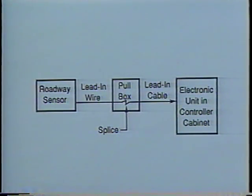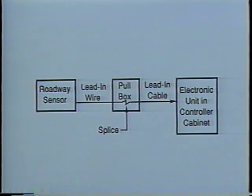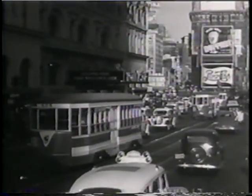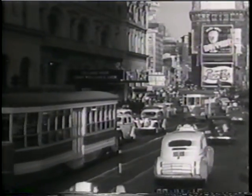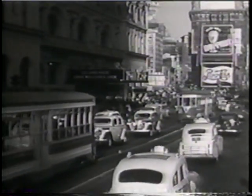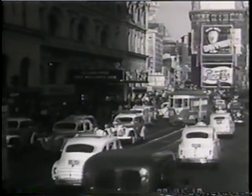Of these, the two types of traffic detectors most commonly used today are the inductive loop detectors and the magnetometers. Each of these systems has three main components: a roadway sensor, a lead-in cable connecting the sensor at a pull box to the controller cabinet, and an electronic unit in the controller cabinet itself.